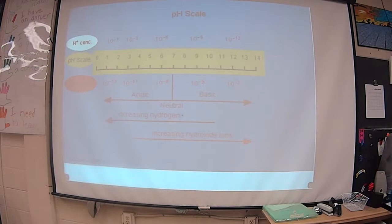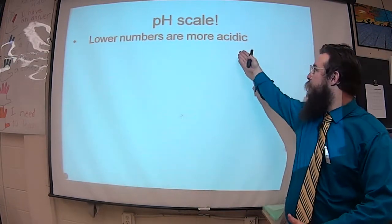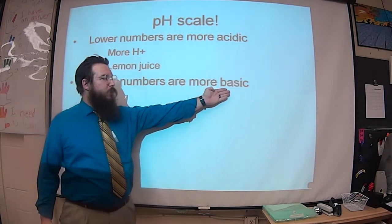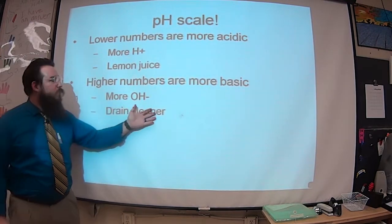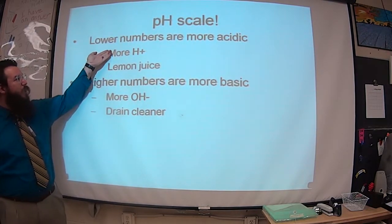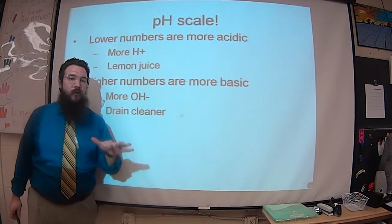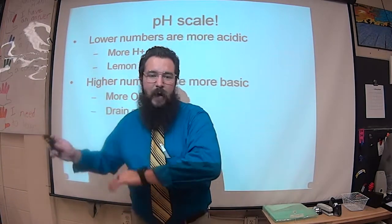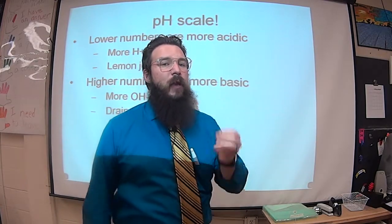On the pH scale, lower numbers are more acidic — we've got more H⁺, which also makes them more acidic. Lemon juice is a great example of something with a low pH, meaning it is pretty acidic. Higher numbers on the pH scale are called basic or alkaline — they've got more OH⁻, the ion associated with bases. A great example of a strong base with a high pH would be drain cleaner. Notice that both extremes could be dangerous: a lower pH is dangerous because of lots of H⁺, and a high pH is dangerous because of lots of OH⁻. The farther you get from neutral on either side, the more reactive, dangerous, and corrosive it is.